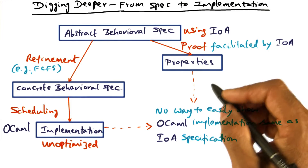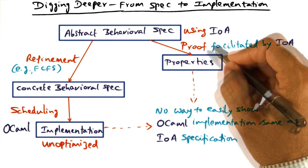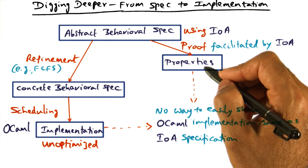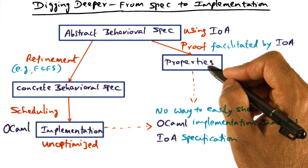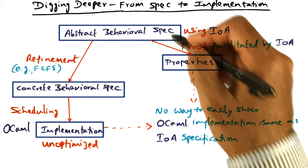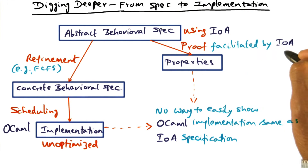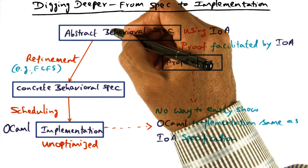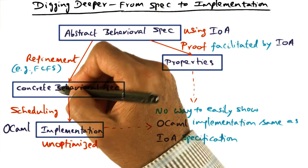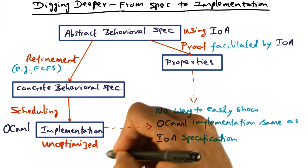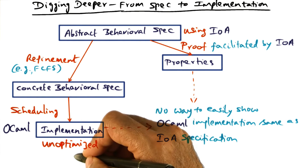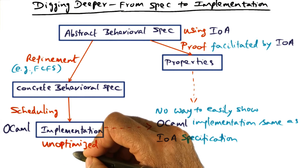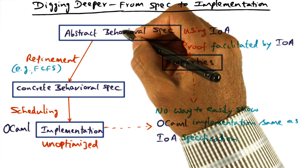One word of caution though: I mentioned that using IO Automata is fantastic from the point of view of proving that the properties we want in the original subsystem are actually met by the behavioral spec. That is facilitated by the IO Automata framework. But this path that we took — going from the abstract to the concrete behavioral spec to the implementation — finally ending up with this unoptimized version, which is executable, there is no guarantee that this unoptimized version of code that we produced is actually meeting this behavioral spec.